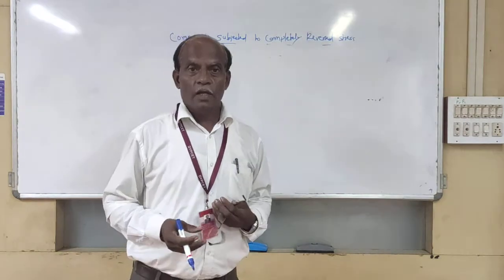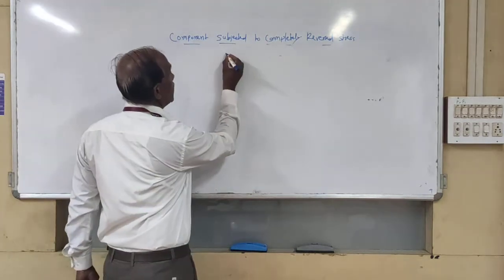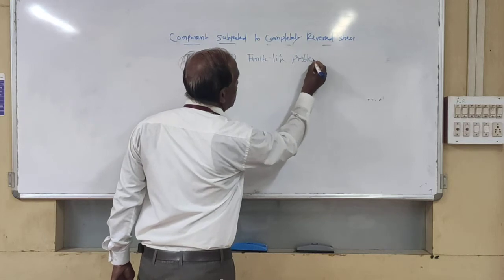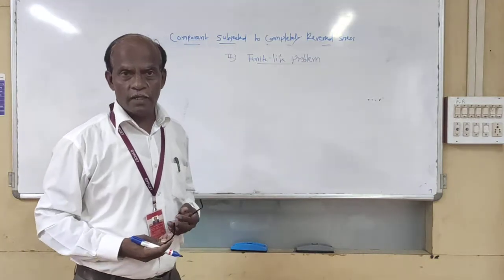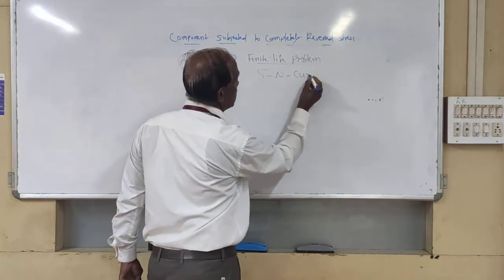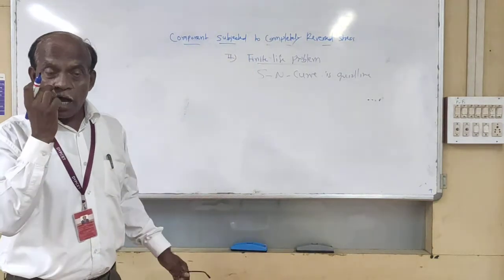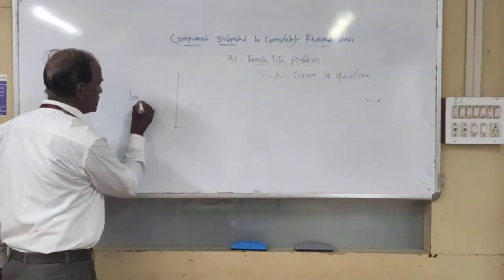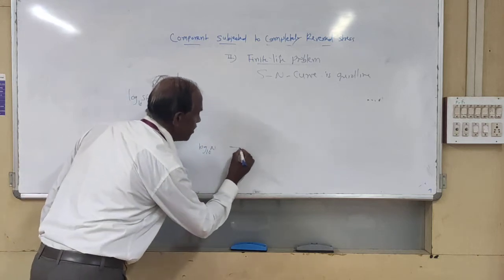Now there is an extension of the problem. Again we are discussing the second case, where our components are going to the complete inverse space for finite life. The second type of finite life component is specified. In this case, the SN curve is a guideline. The SN curve has log to the base ten of applied stress on the y-axis, and log to the base ten of number of cycles on the x-axis.